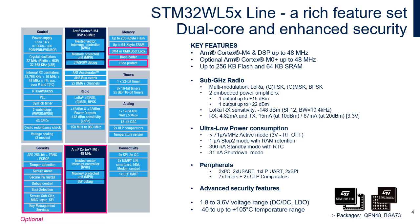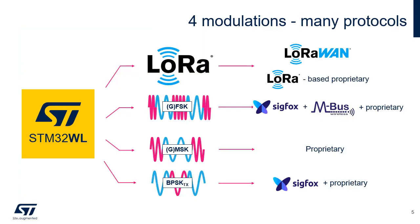The advantage of such architecture is its full openness and multi-modulation capabilities, enabling users to flexibly implement any compatible sub-gigahertz protocol. Indeed, the four available modulations — namely LoRa, GFSK, GMSK, and BPSK — make the STM32WL series suitable for LoRaWAN, Sigfox, or WMBUS implementations, for instance.